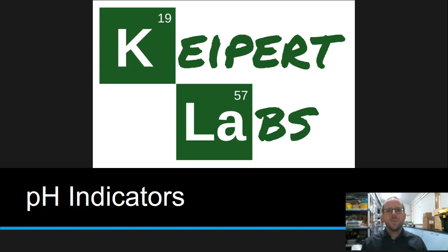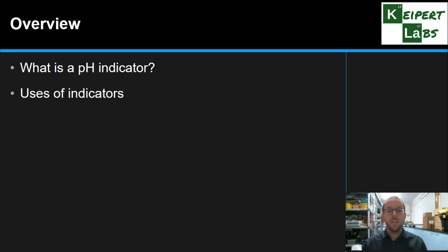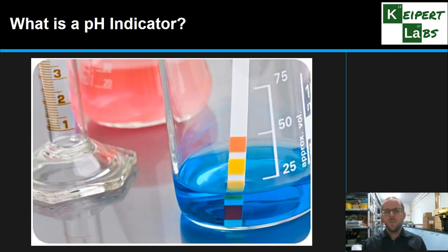Hi everyone, welcome to this episode of Kuypert Labs. In today's episode we're going to talk about pH indicators. We're going to define what we mean by a pH indicator, go through some examples of how indicators can be useful, look at some examples of indicators we've come across, and then think about the science behind how they actually work.